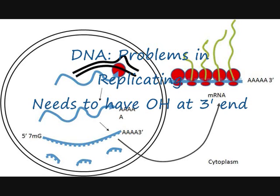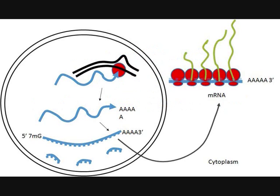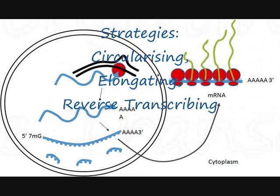In a host cell, a primer with a 3' OH must be present at the end. Thus, DNA viruses develop strategies like circularizing their DNA, elongation of the 3' OH group, and reverse transcription to ensure replication.